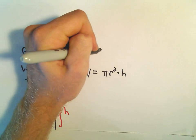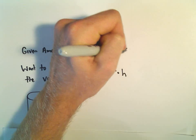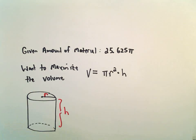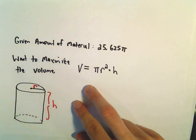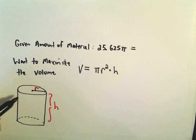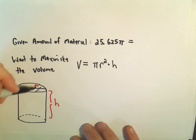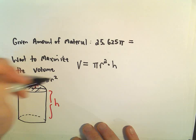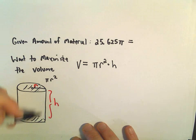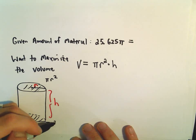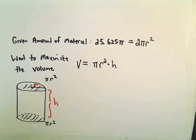Okay, so the amount of material, we know that that's 25.625π. That's what's given to us. And I need to think about how much material I've used making this can. So the area of the top would be πR². Well, that would also be the area of the bottom. So if we take the area of the top and the bottom, we've used 2πR² units worth of material.